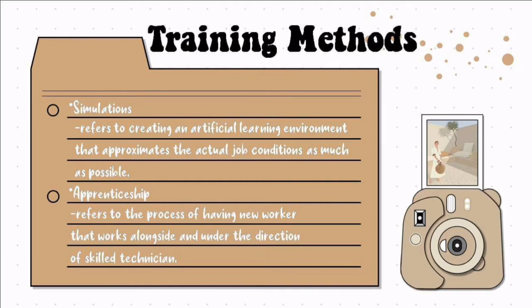The fourth method is apprenticeship — the process of having a new worker work alongside and under the direction of a skilled technician. It's like being a sidekick. In this form of training, you observe the actual worker on the job, you are allowed to assist them, maybe run errands for them, so you get used to how they work.